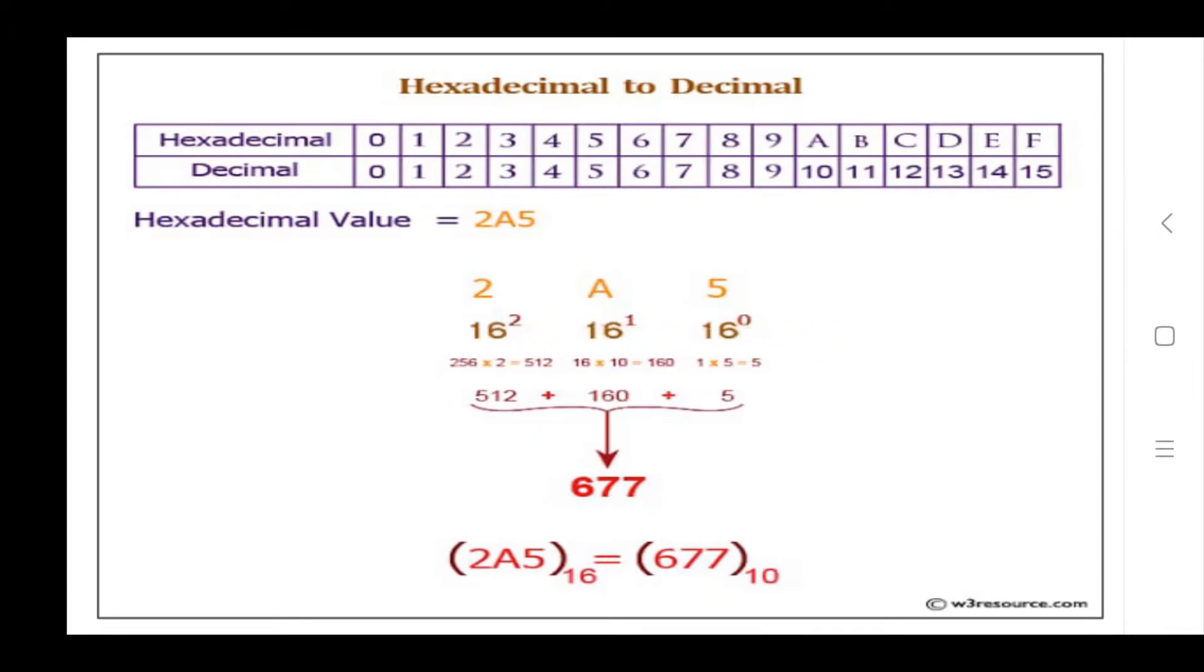Then, right to left position: 16 raised to 0, 16 raised to 1, then 16 raised to 2. Check 16 power 0: result is 1 into 5, equals 5. Then check 16 power 1: result is 16 into A, which is 10, so 16 into 10 equals 160.